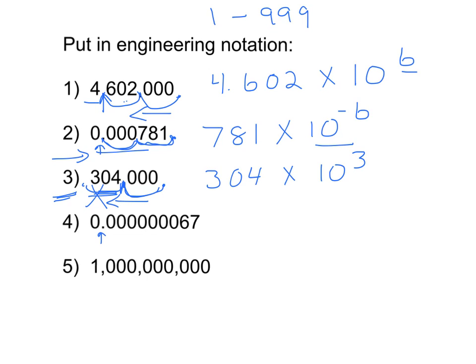For number four, my decimal starts here. If I move it one, two, three, I don't have a number between one and 999 yet. So I go another one, two, three — I still don't. So I'll go another one, two, three. Now I will have 67 to the left of the decimal. So that would be 67 times 10. I moved it nine places, and the exponent will be negative because I moved my decimal to the right — I'm multiplying 67 by a very small number in order to get a very small number.